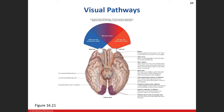This diagram shows our visual pathways with binocular stereoscopic vision. Each individual eye has its own visual field, but where they overlap is what allows us depth perception. That's why if you have monocular vision — only one eye — you can't get a commercial driver's license or operate a truck, because you need that depth perception.